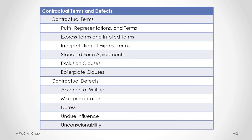In this part of this module, we will look at the differences between a puff, a representation, and a term of a contract, then explain what is an express term of a contract versus an implied term of a contract, and look at how we go about interpreting express terms of a contract when there is a dispute as to the meaning of what is written in a contract.